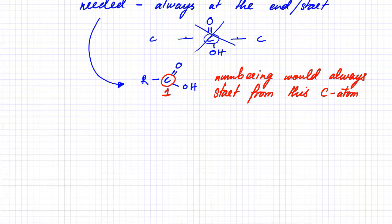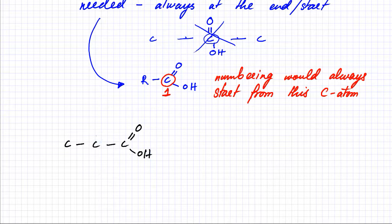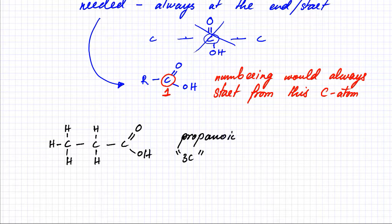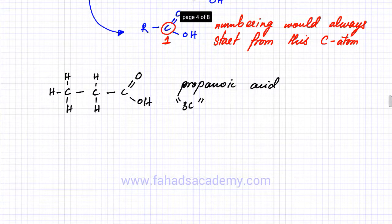Let's do a few examples. If there are three carbon atoms with a carboxylic acid functional group attached to one end, and the rest of the chain has hydrogens attached as usual, the name starts with 'prop-' since it has three carbon atoms. Since it's a carboxylic acid, the name is propanoic acid. You don't need to number anything or state the position, because it's always at the beginning or end.